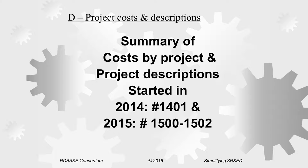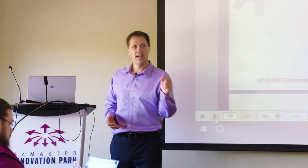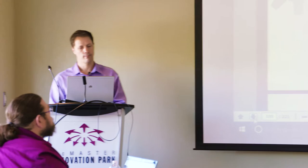Project 1401 is the first project I started in 2014 — the last fiscal year — because I'm claiming 2015 now. So I know that project is a continuation project and I've done it for one year. Projects 1500 to 1502 are all new ones I started in the current year. That's just a numbering scheme I recommend; you don't have to do that, but something to help you keep that in mind is important when you're filling out the form.